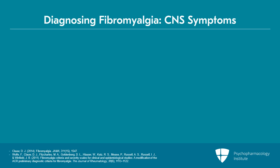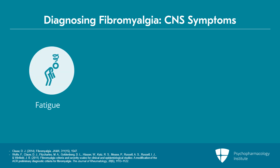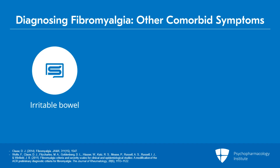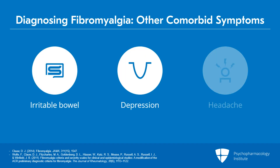People are also asked about central nervous system symptoms that are phenotypic markers of nociplastic pain or fibromyalgia — specifically fatigue, memory problems, and sleep disturbances. Those are scored from 0, 1, 2, or 3, based on whether they're not present, slight, moderate, or severe. Additionally, people are asked about irritable bowel, depression, or headache, and they get one point each for those questions.